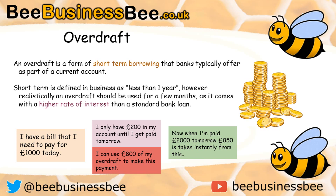For example, if I have a bill to pay of £1,000 today and I only have £200 in my bank account until I get paid tomorrow, I can use £800 of my overdraft facility to make this payment. When I get paid £2,000 tomorrow, £800 of that will be taken away instantly, plus maybe £50 in interest charges for using my overdraft. Some overdrafts come fee-free as part of their bank accounts, especially for premium rate customers, so borrowing that £800 might only cost you £800 — but it has to be paid back.